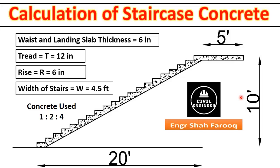Today we have selected a practical staircase having length 20 feet, height of the staircase is 10 feet, and length of the landing is 5 feet. Waist slab and landing slab thickness is 6 inches. Tread size is 12 inches — tread is the horizontal distance covered by a step — and rise is the vertical distance, which in this case is 6 inches or 0.5 feet. Width of the stairs is 4.5 feet. The concrete used for this staircase is 1:2:4.